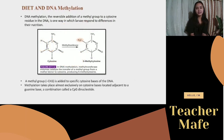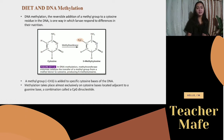What is the chemistry behind this? DNA methylation is the reversible addition of a methyl group to a cytosine residue in the DNA, and it is one way in which larvae respond to differences in their nutrition. The enzyme methyltransferase catalyzes the transfer of a methyl group — consisting of 1 carbon and 3 hydrogens — from a methyl donor to a cytosine, converting it to 5-methylcytosine.